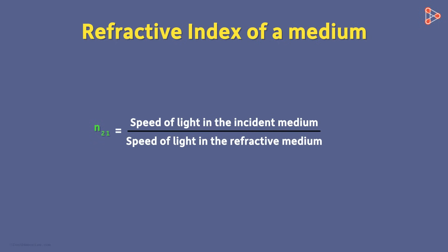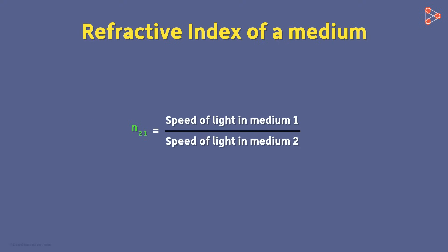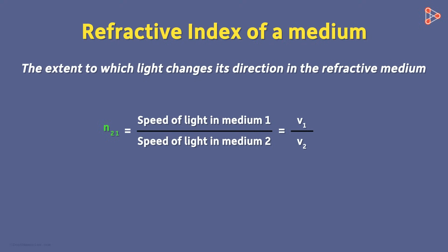It is denoted by N and the two numbers in the base are the two mediums. We read this as refractive index of medium 2 with respect to the incident medium 1. Also, V1 and V2 are speeds of light in medium 1 and 2 respectively. We can also define it as the extent to which light changes its direction in the refractive medium.